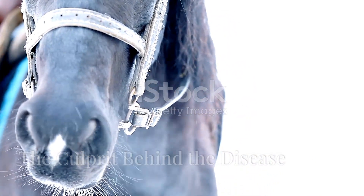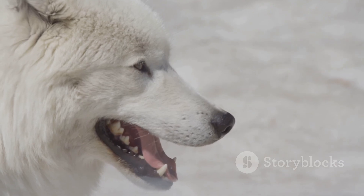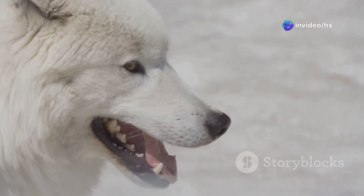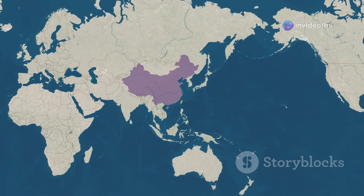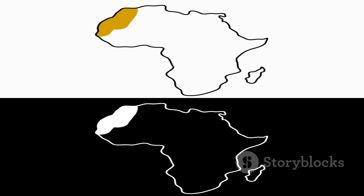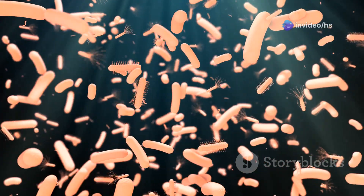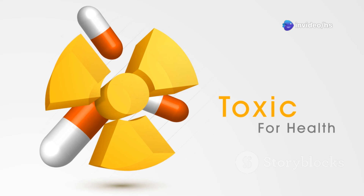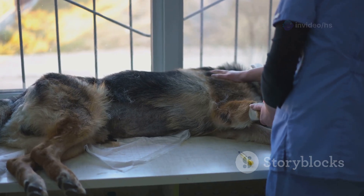The causative bacteria are often found in the respiratory systems of animals. However, only certain types cause HS. These specific types are called serotypes. In Asia, serotype B2 is the main culprit. In Africa, it is serotype E2. These serotypes are particularly dangerous. These bacteria produce toxins, which are like poisons that damage the animal's body, contributing to the rapid and severe progression of HS.